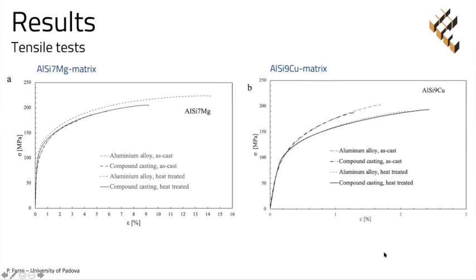These two figures summarize the tensile test results. Referring to the AlSi7Mg matrix on the left side, it is observed how the steel wire mesh reduced the mechanical properties of the samples in terms of both ultimate tensile strength and elongation at rupture. This is attributed to the great number of lack of filling zones that promoted premature debonding between the matrix and the reinforcement, and a reduction of the cross-section area compared to specimens without the insert. The improvements obtained with the heat treatment are attributed to the silicon morphology modification.